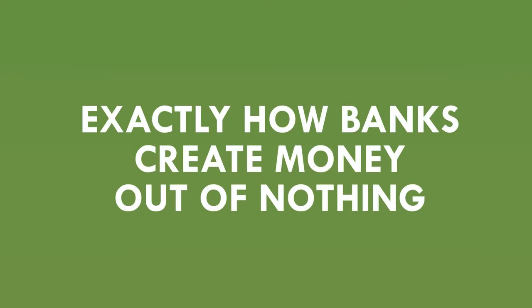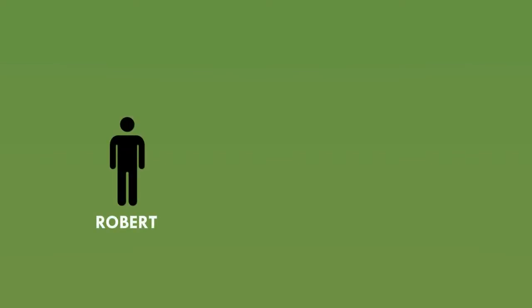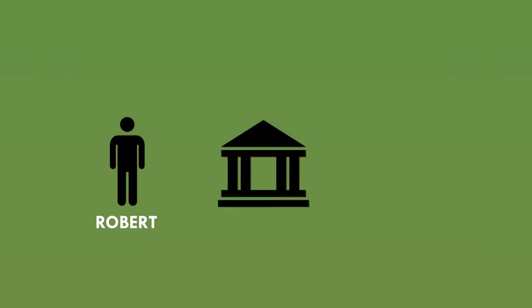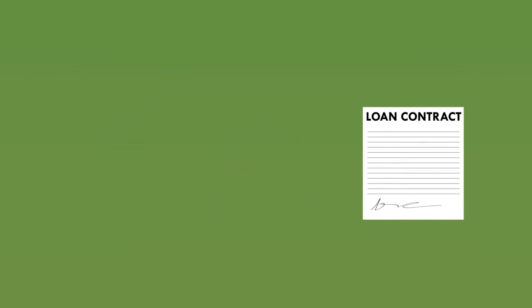Back to the numbers in your bank account. These numbers are all created by banks, and the vast majority were created when somebody took out a loan. A customer, who we'll call Robert, walks into a Barclays bank and asks to borrow £10,000 for home improvements. Barclays runs a quick automated credit check and decides the customer can be relied on to keep up repayments. The customer signs a loan contract promising to repay the £10,000 plus interest over the next four years according to an agreed monthly schedule. This loan contract is a legal contract that binds the customer to make repayments, meaning it is considered to be worth £10,000 plus interest.